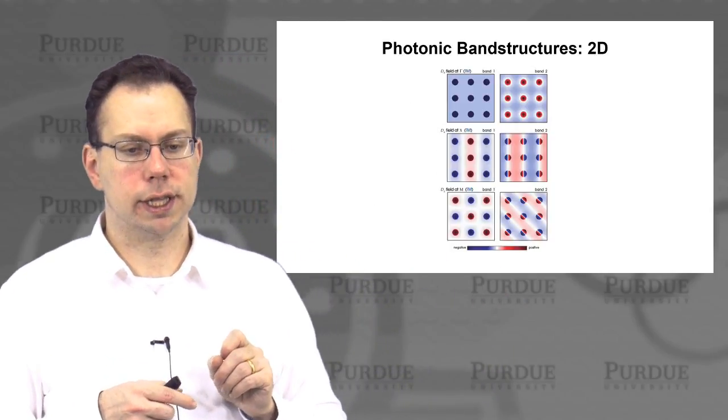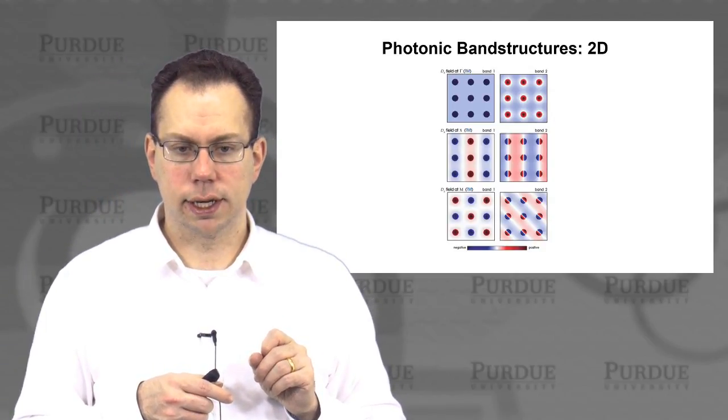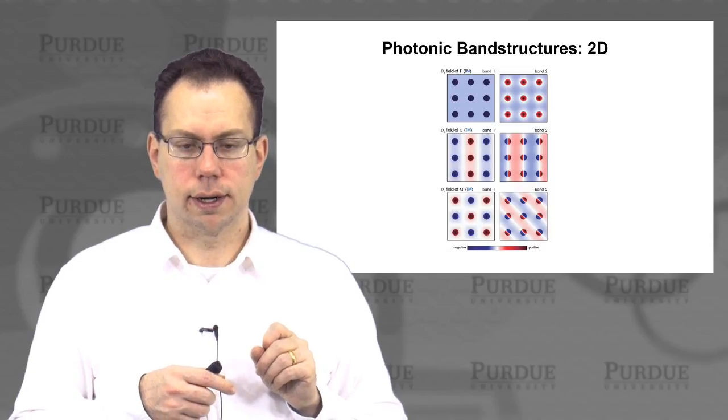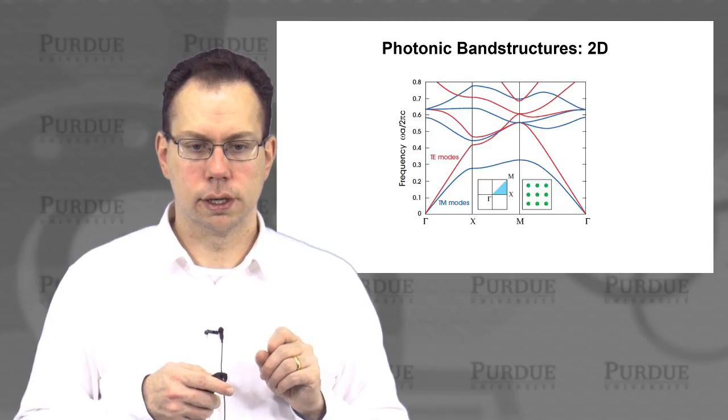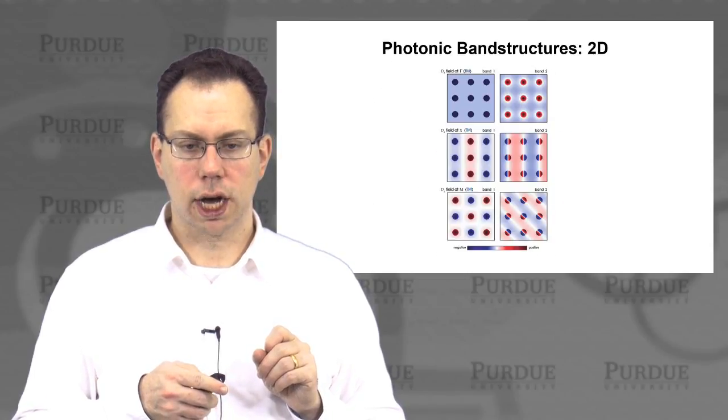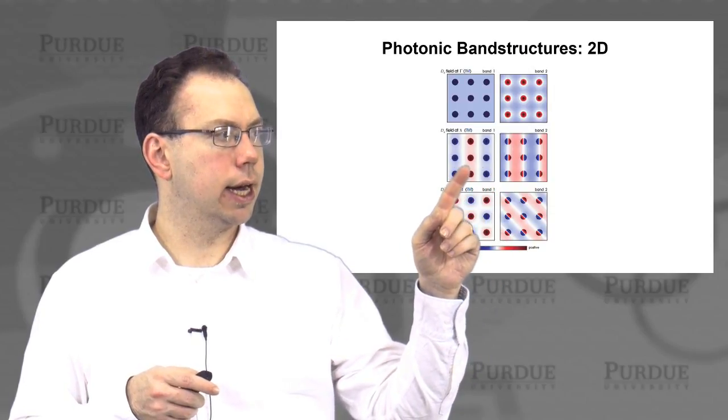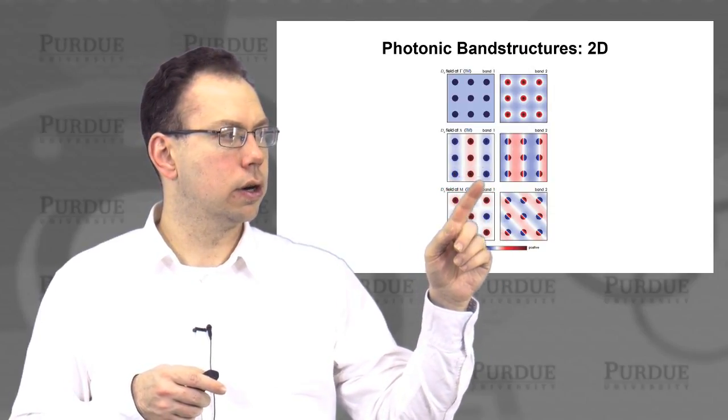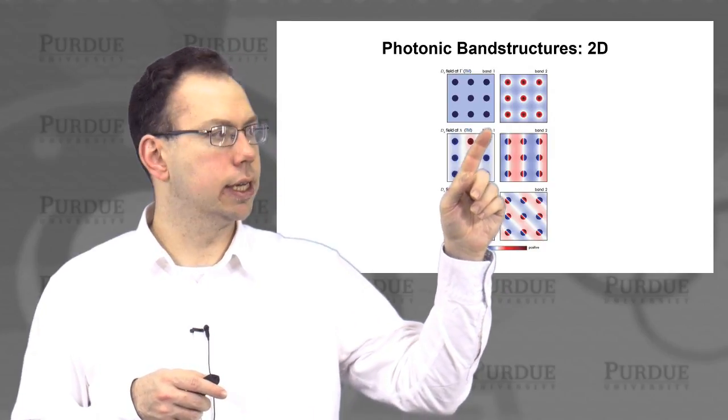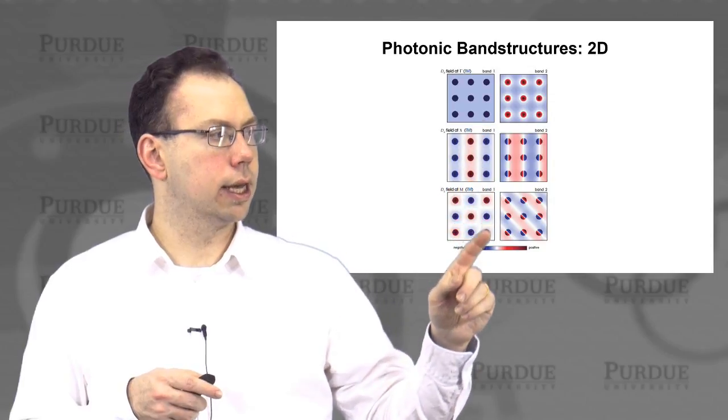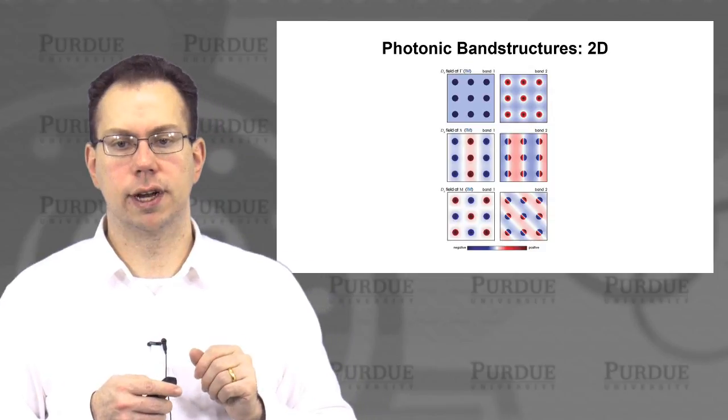And just to show you what the modes look like in both cases, you can actually see that for the TM modes, that there's not necessarily like a really huge contrast compared to before. But you basically have modes that are highly localized in high dielectric regions, or you have modes that are actually delocalized outside of the high dielectric regions. So basically things like this. And so this is from the photonic crystals textbook by Joannopoulos et al.